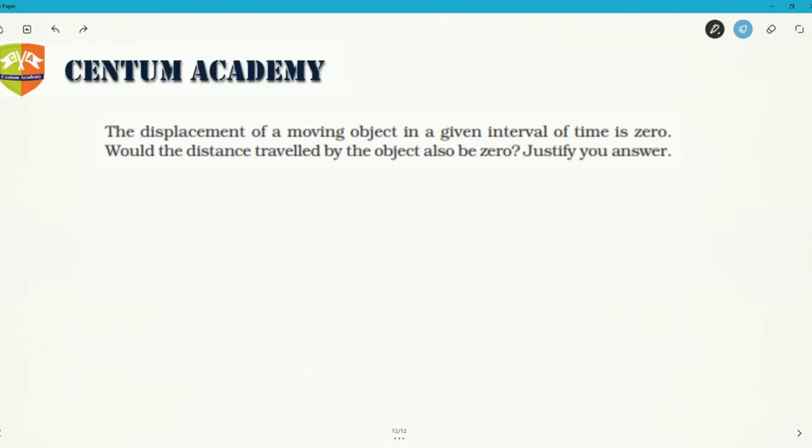Hello friends, the question is: the displacement of a moving object in a given interval of time is zero. So would the distance traveled by the object also be zero? This is the question and you'll have to justify your answer.